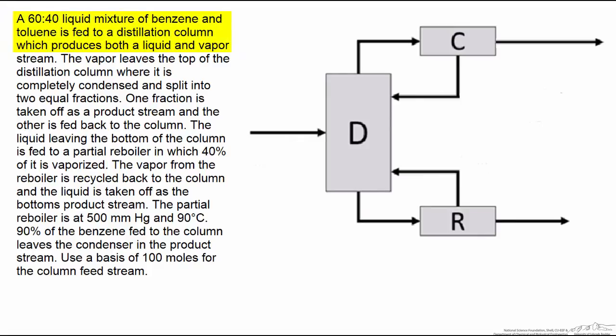So here we have a 60-40 liquid mixture of benzene and toluene that's fed to a distillation column. And on the right you have a classic picture of a distillation column. And so here's our feed and it's 0.6 benzene and 0.4 toluene.